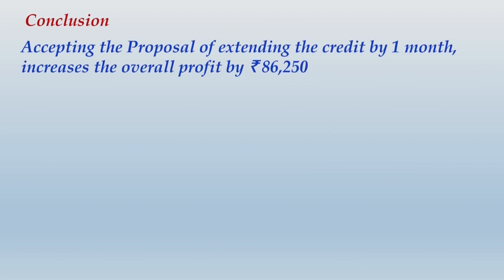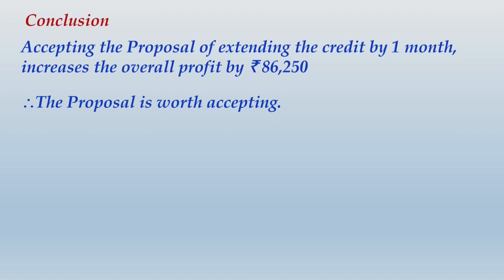This is a simple question. Comparative profitability statement with two columns — present (1 month) and proposal (2 months). Total sales: Rs. 24 lakhs and Rs. 30 lakhs. Total variable cost: Rs. 18 lakhs and Rs. 22,50,000. Fixed cost same in both columns. Cost of goods sold: Rs. 21,60,000 and Rs. 26,10,000. Cost of funds blocked: Rs. 45,000 and Rs. 1,08,750. No bad debt information given. Net benefit: Rs. 1,95,000 (present) and Rs. 2,81,250 (proposal). Accepting the proposal increases overall profit by Rs. 86,250 — therefore the proposal is worth accepting.